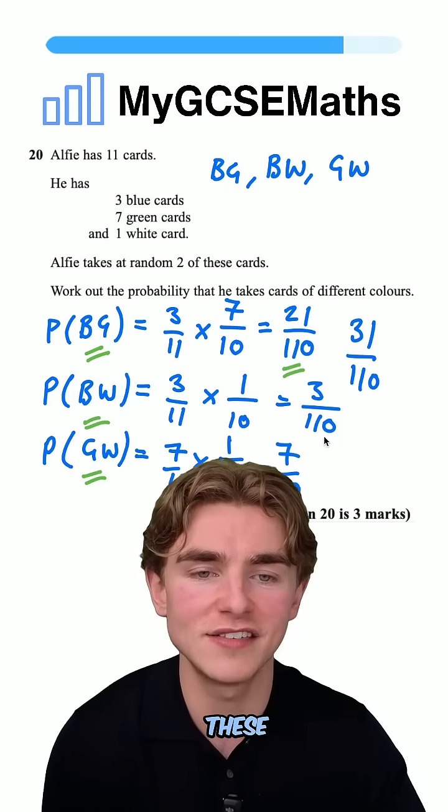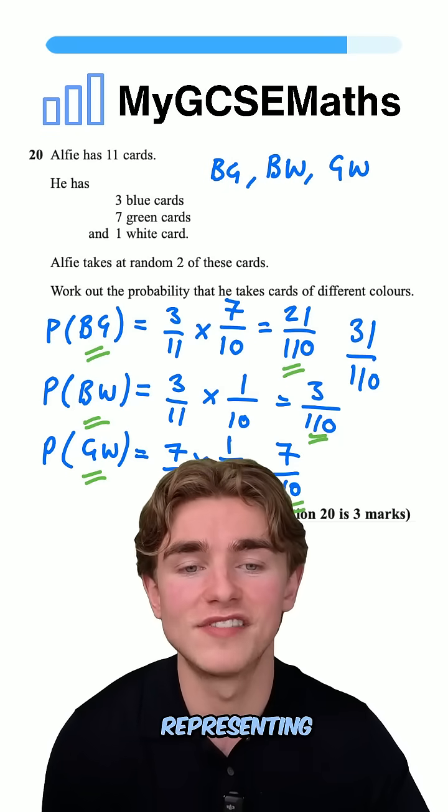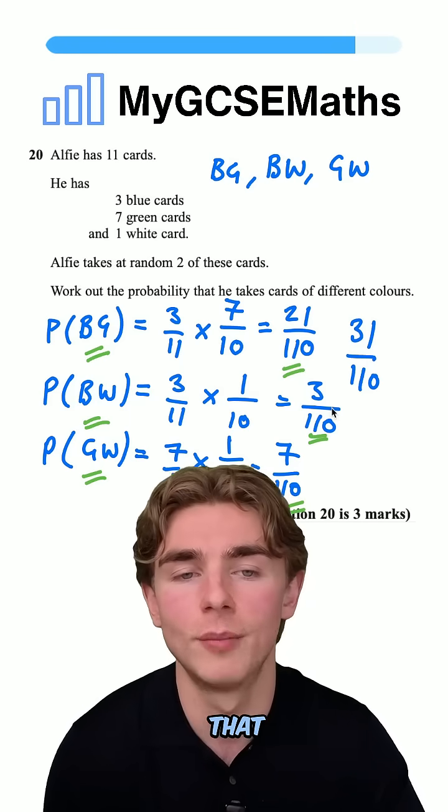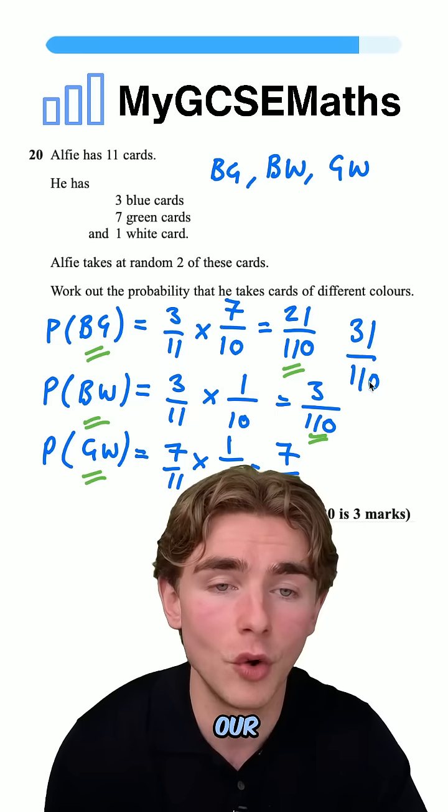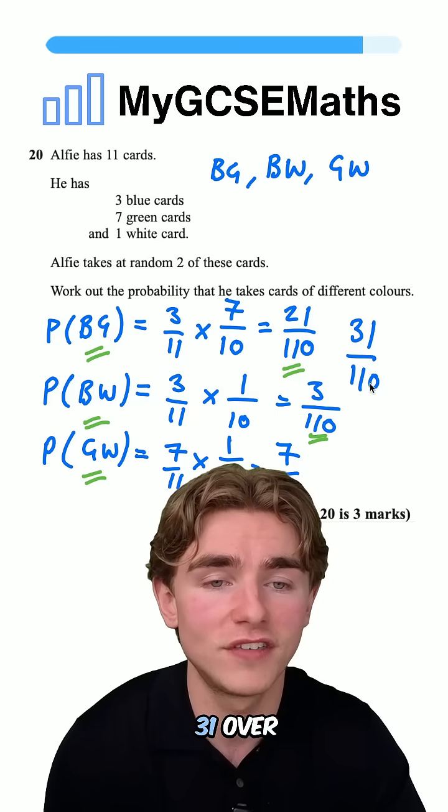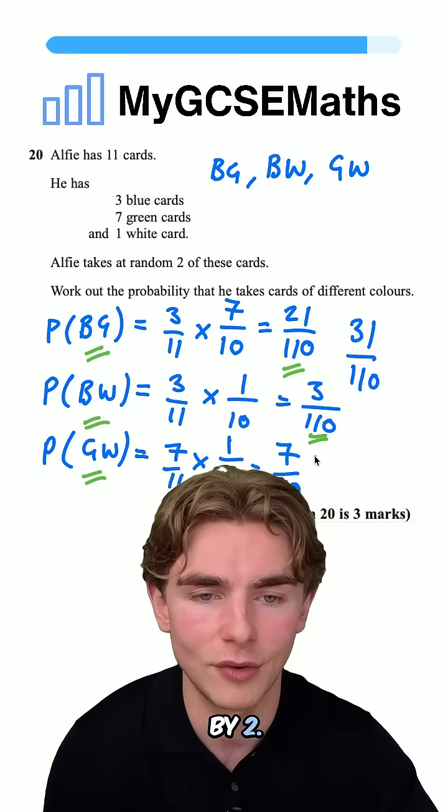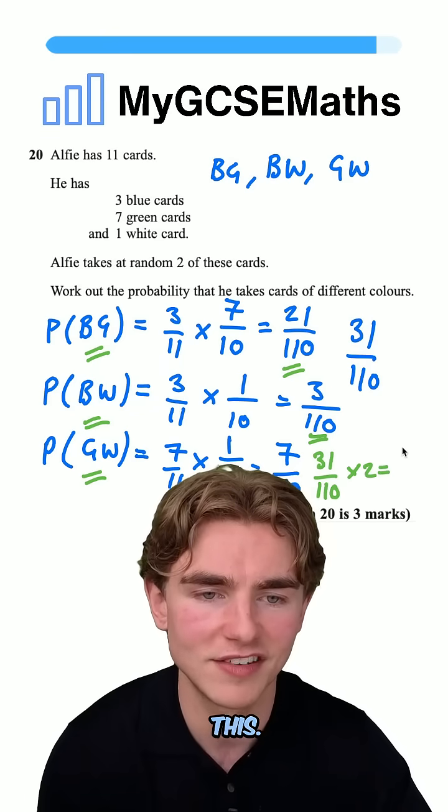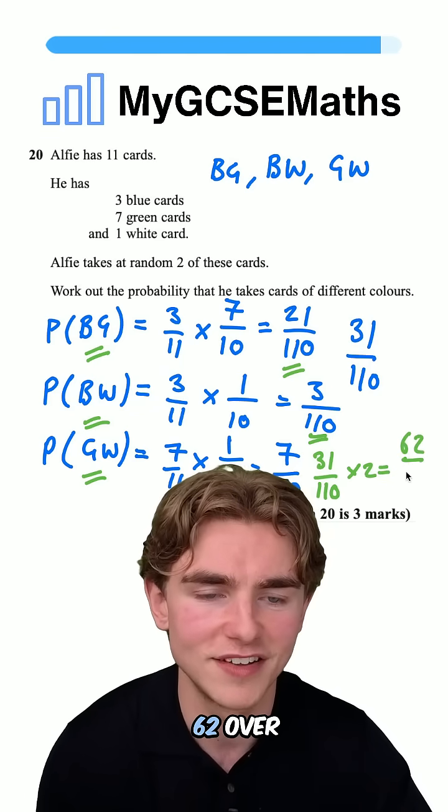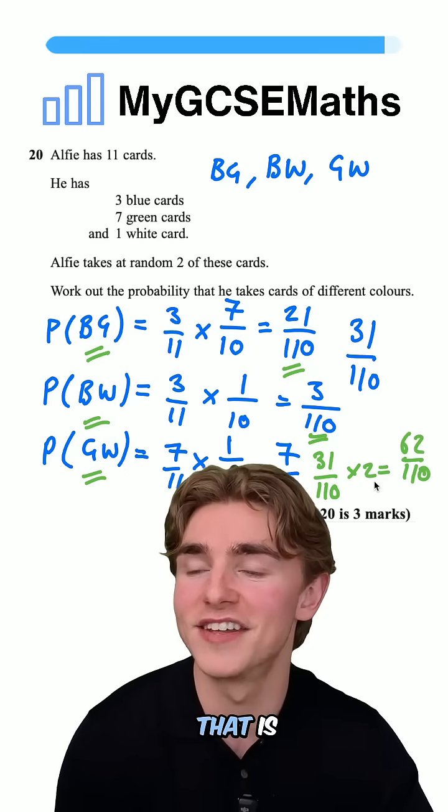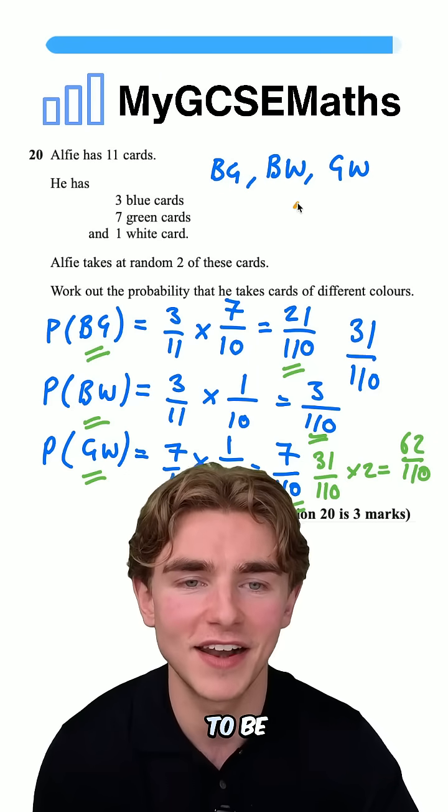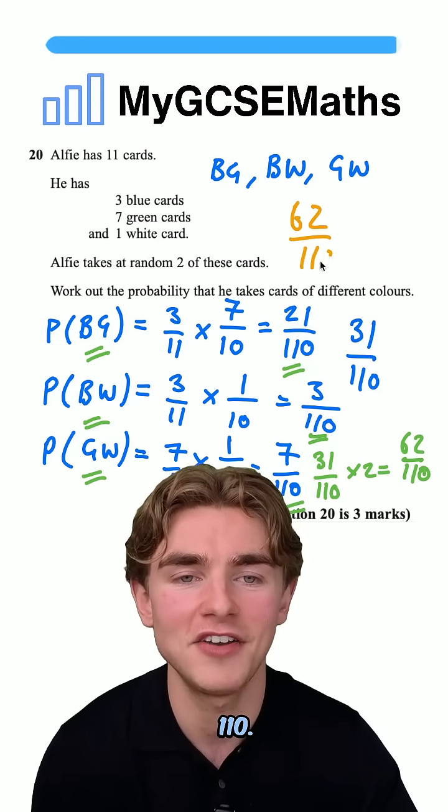So each of these, we're going to multiply by two, representing the fact that there are two different options associated with each combination. We're going to multiply our overall probability by two. 31/110 times 2. I'll just multiply the top by two. 62/110. That is our answer. Let me write it again to be clear: 62/110.